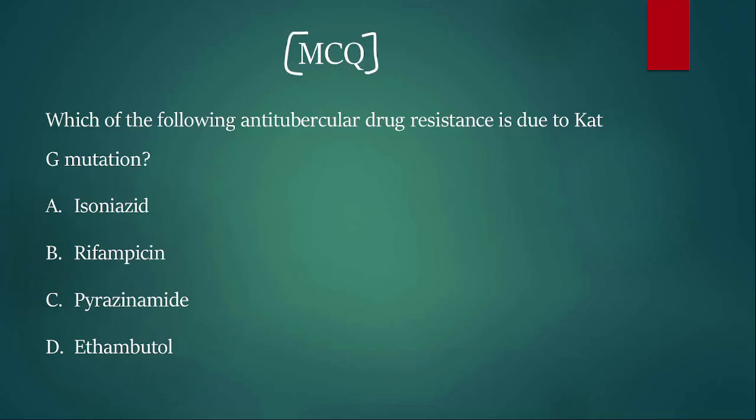Let us move on to the next question. The next MCQ will be: Which of the following anti-tubercular drug resistance is due to catG gene mutation? You have the HRZD options. Try to answer this within five seconds. Yes, it's an easier one. It is due to isoniazid.